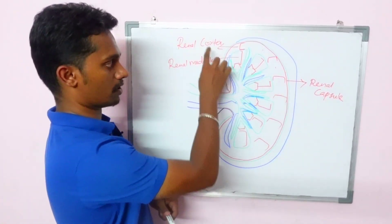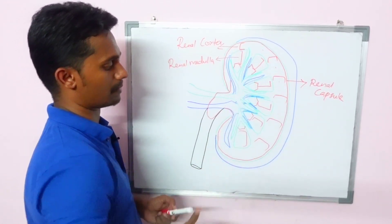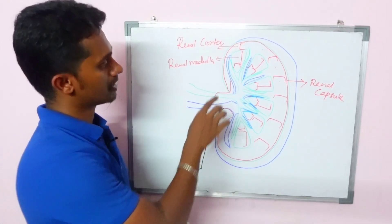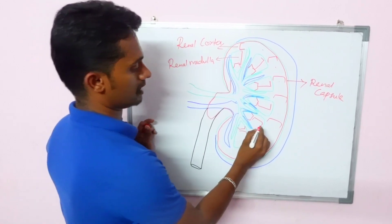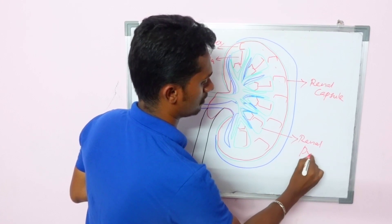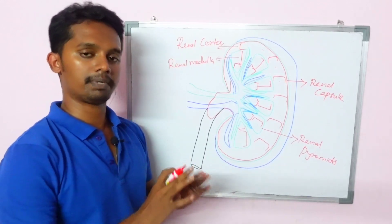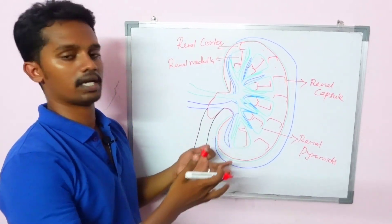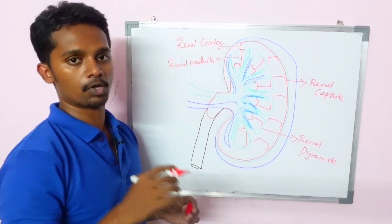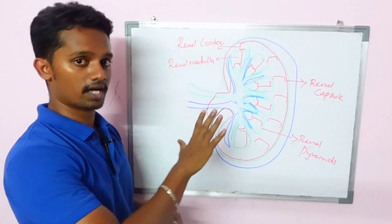Looking at what is present in the center, you can see a pyramid shape. This is called renal pyramids. Now, the nephron is the functional unit of the kidney. That's why the kidney has these distinct parts. The nephron is a very important structure present within the kidney.